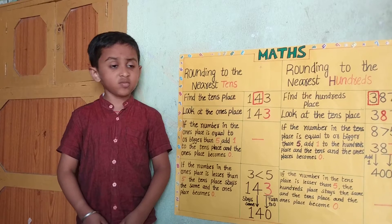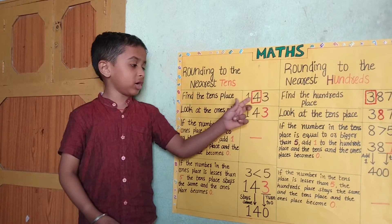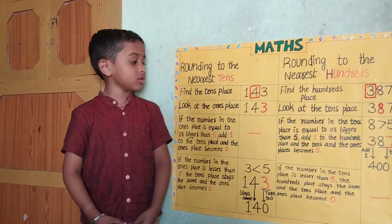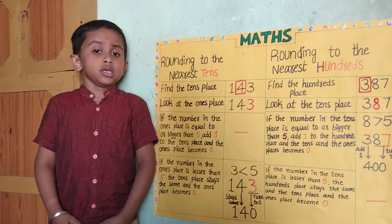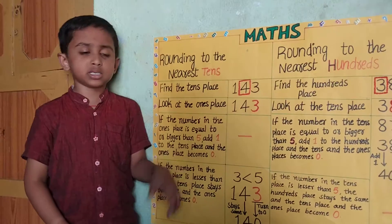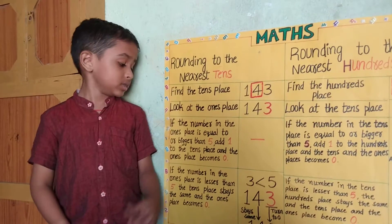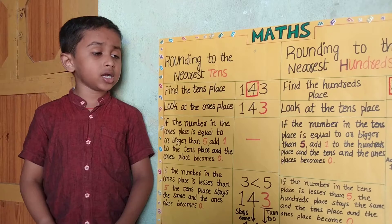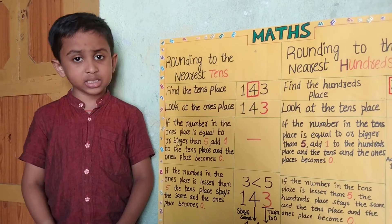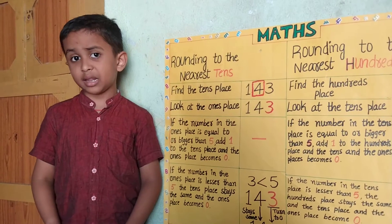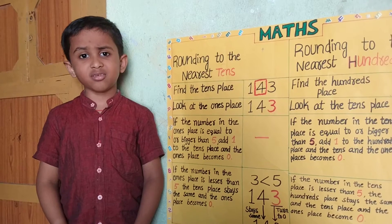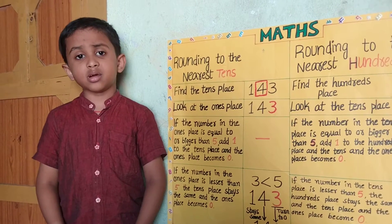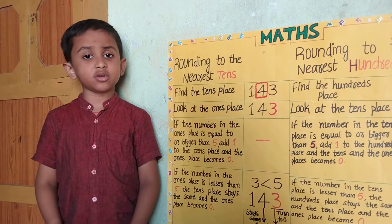For example, we have the number 143. Here we have 4 in the tenth place. Look at the one place. Here we have 3 in the one place. If the number in the one place is equal to or bigger than 5, add 1 to the tenth place and the one place becomes 0.